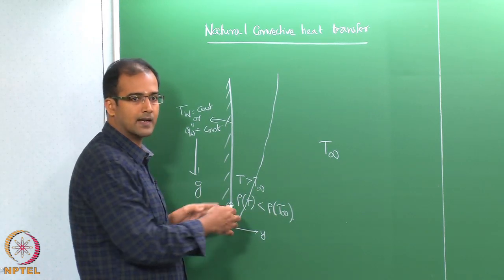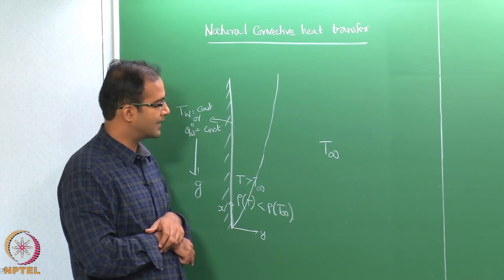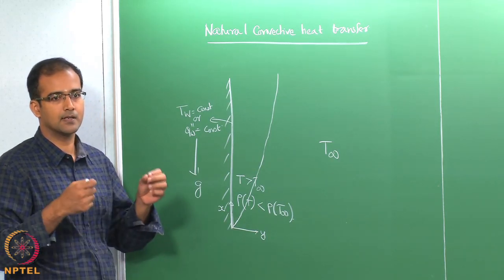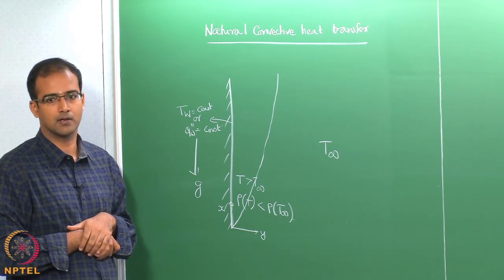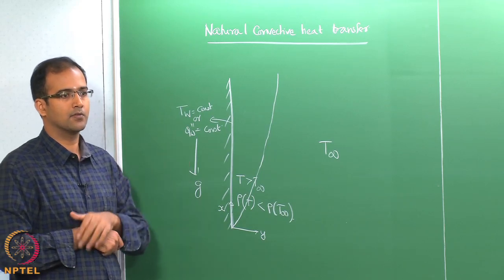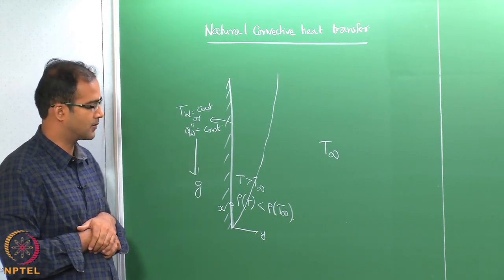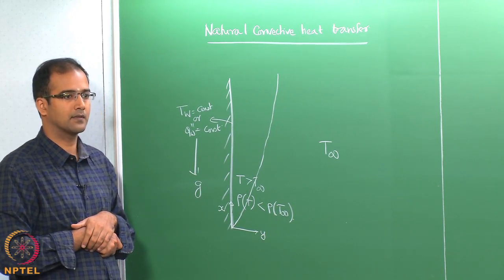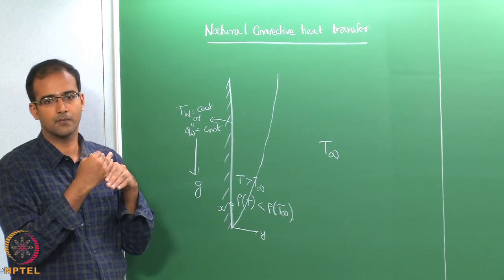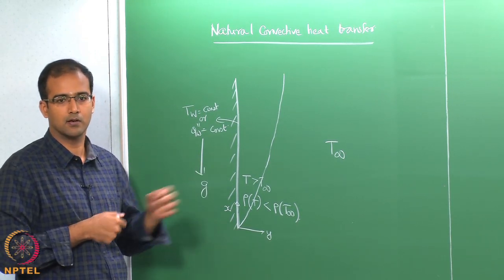This density difference causes the lighter air in contact with the plate to rise up, forming a boundary layer. The temperature difference is the driving potential in the case of natural convection, unlike the pressure gradient in internal force convection or the external flow velocity in external boundary layers. This is a very important aspect of natural convection, and therefore intuitively you should understand that the momentum and energy equations have to be coupled. Unless the information from the energy equation feeds into the momentum equation, you cannot actually solve for the boundary layer growth.